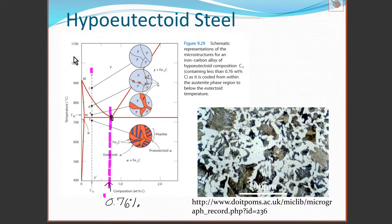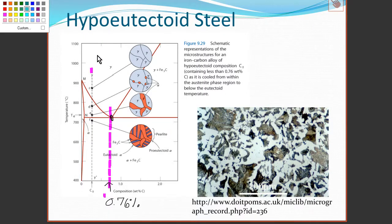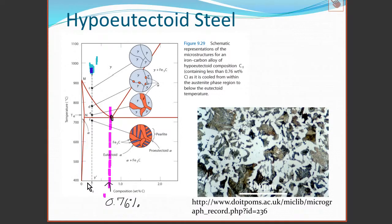If we make the steel red hot, we're going to be in the austenite phase region. With a composition of roughly 0.25 to 0.3 percent carbon — which is less than the 0.76 eutectoid composition — this is a hypo-eutectoid steel. If we make it red hot it's going to be in the gamma phase, the austenite phase. Now let's cool it down.